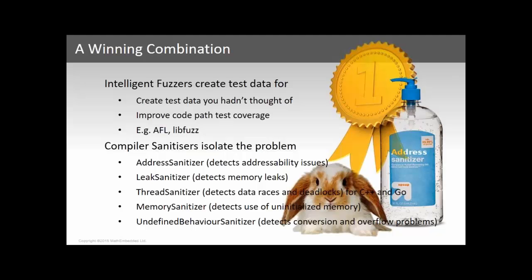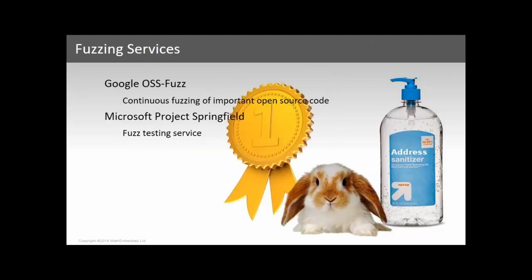To summarize: intelligent fuzzers create test data you hadn't thought of and improve code coverage — two main examples being American Fuzzy Lop and LibFuzz. Compiler sanitizers isolate the problem; in addition to the address sanitizer, there's also the leak sanitizer, thread sanitizer, memory sanitizer, and undefined behavior sanitizer, and work on these continues. Between the two, we're finding a lot of security vulnerabilities in open source code.